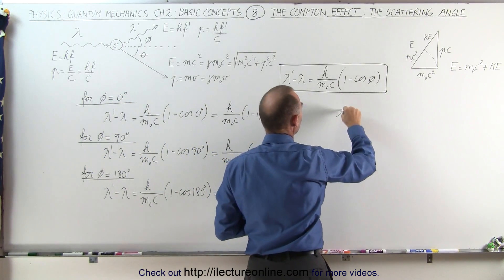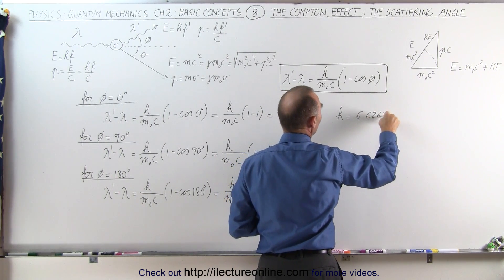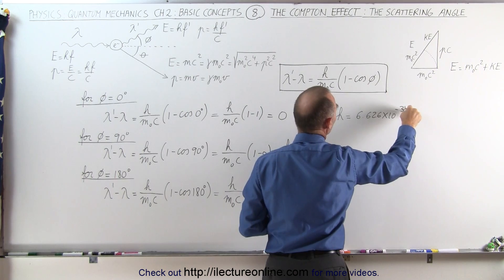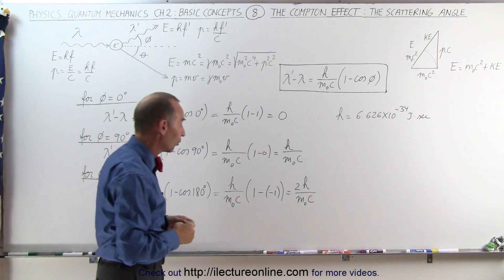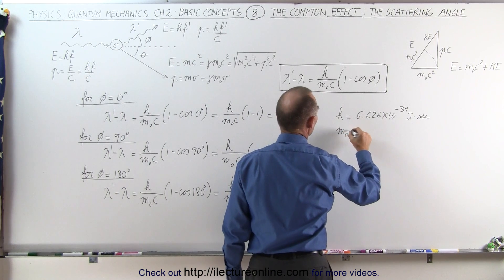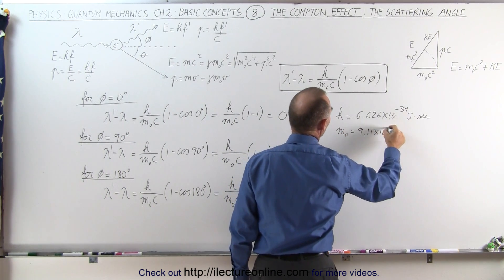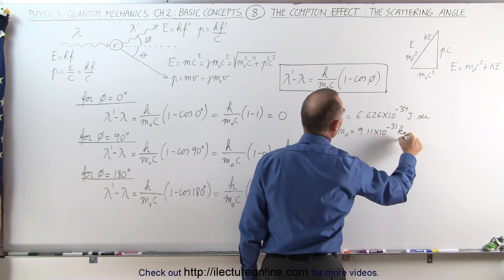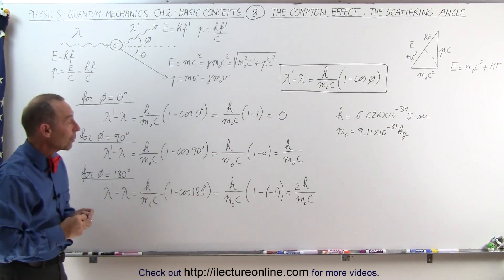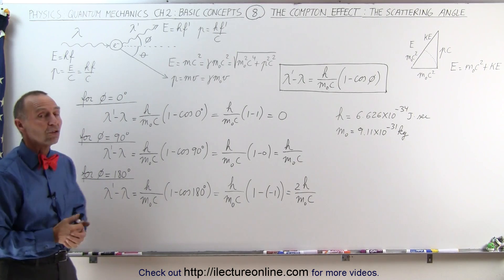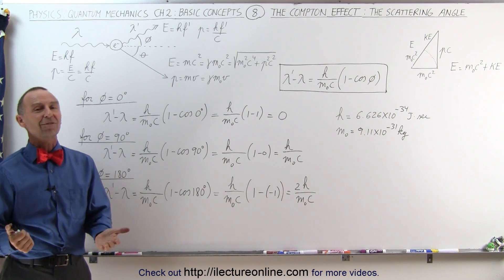For reference, h is equal to 6.626 times 10 to the minus 34 joule-seconds, and the rest mass of an electron is 9.11 times 10 to the minus 31 kilograms. In the next several videos, we'll see examples of how we actually calculate the change in wavelength due to Compton scattering. And that's how it's done.